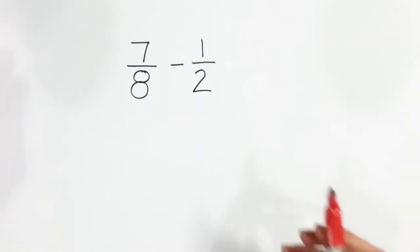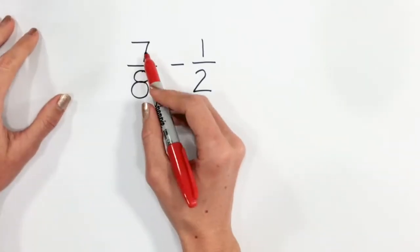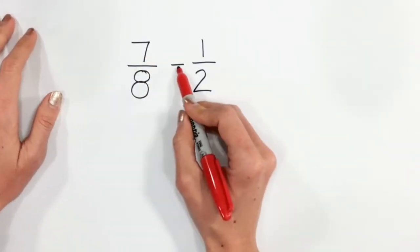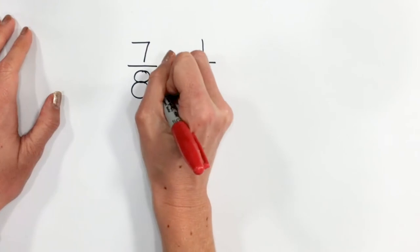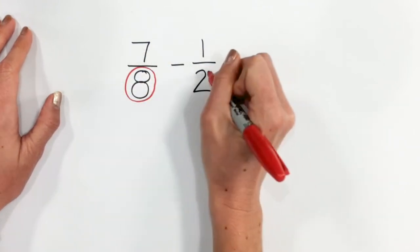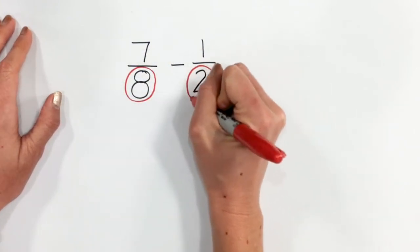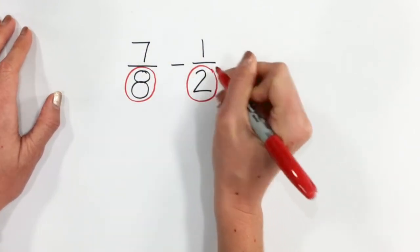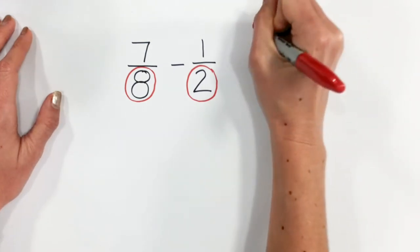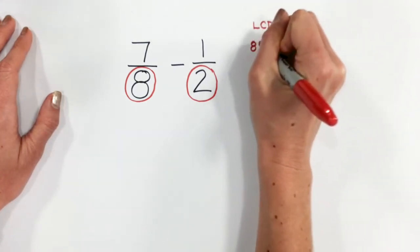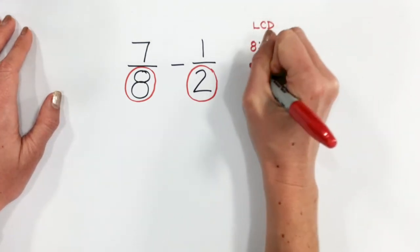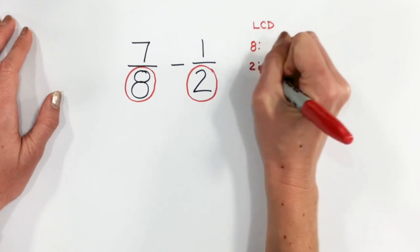Let's use these same steps to take a look at another example. Here we have seven-eighths minus one-half. So our first step would be to look at the denominators, and if they are unlike, we need to make them the same by finding the least common denominator. So we're going to go ahead and write out our multiples of eight and our multiples of two.